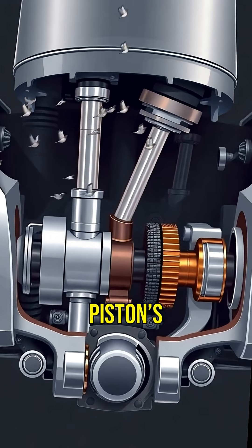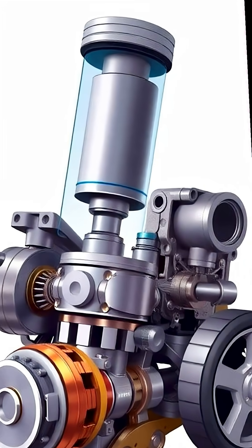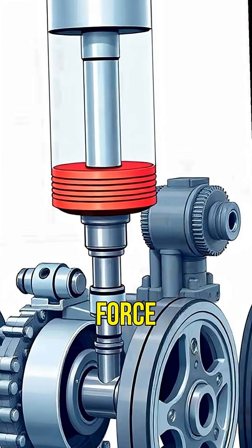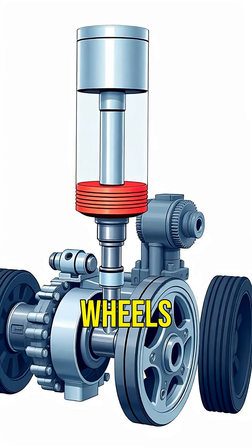Fascinating, right? The piston's movement turns the crankshaft. The crankshaft converts the up-and-down motion into rotational force, driving the car's wheels.